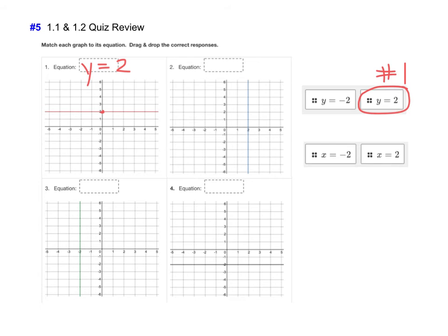Equation number 2 is a vertical line. Notice how it also crosses at 2, but 2 is on the x-axis. Well, vertical lines are always x equal. And since it crosses the x-axis at 2, this would be x equal 2. So I would go ahead and drag and drop that there to number 2.